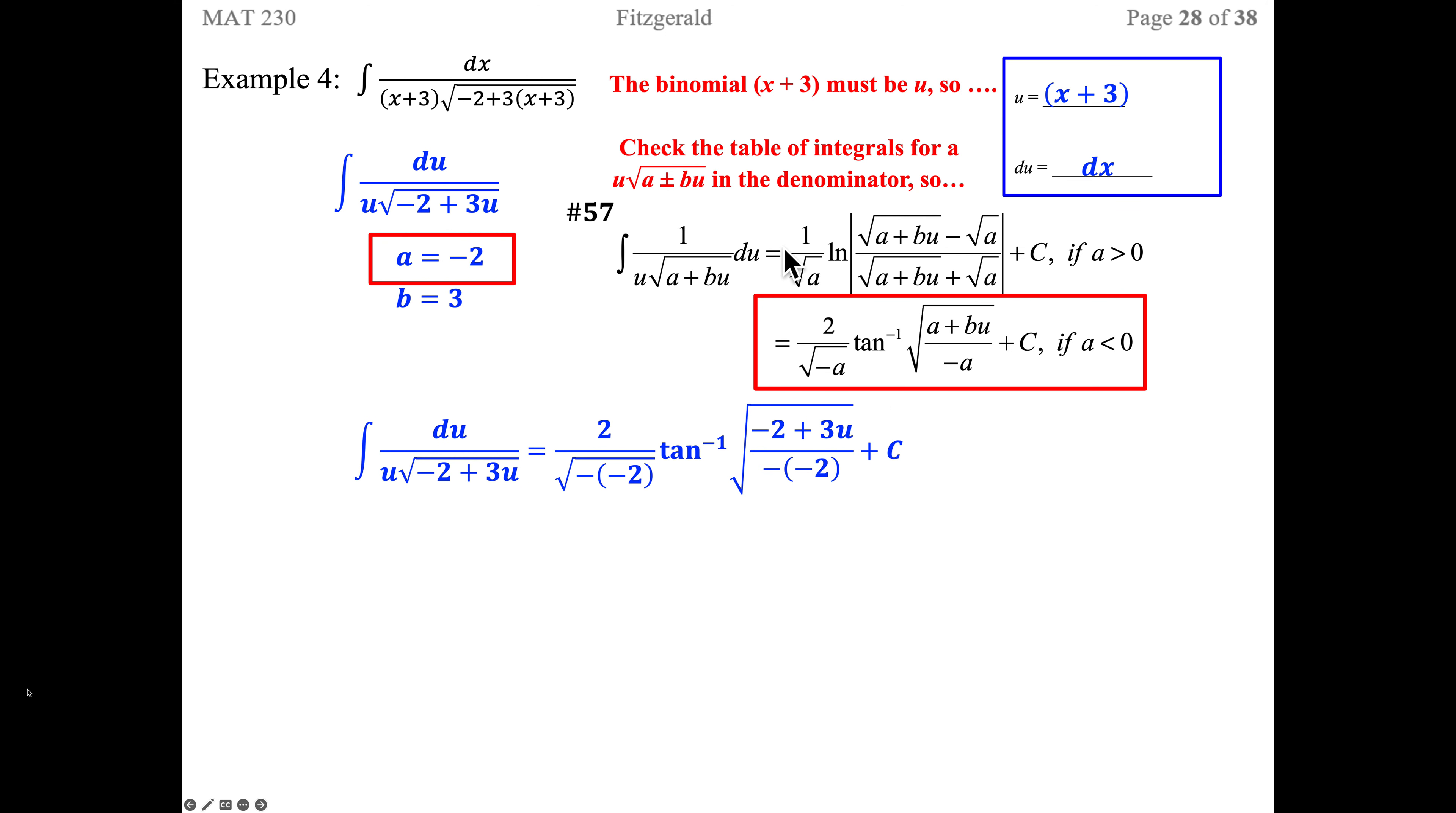We have 1 over the square root of negative negative 2. That makes this a positive, that's why there's the different form. Times the inverse tangent of the square root of negative 2 plus 3U over negative times negative 2 plus C. Then we'll put X plus 3 back in for the U's. We can simplify our answer to 2 over the square root of 2 times the inverse tangent of the square root of 3X plus 7 all over 2 plus C.